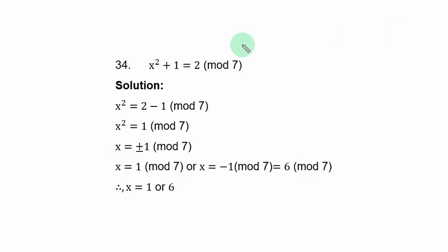Example 34, we have x squared plus 1 equal to 2 modulo 7. This is like a quadratic equation. But we don't need to factorize anyway.